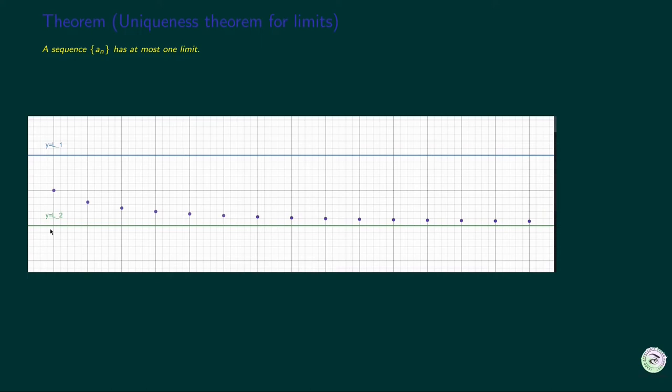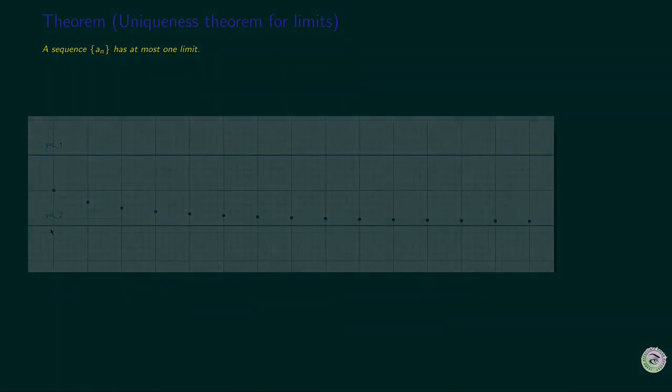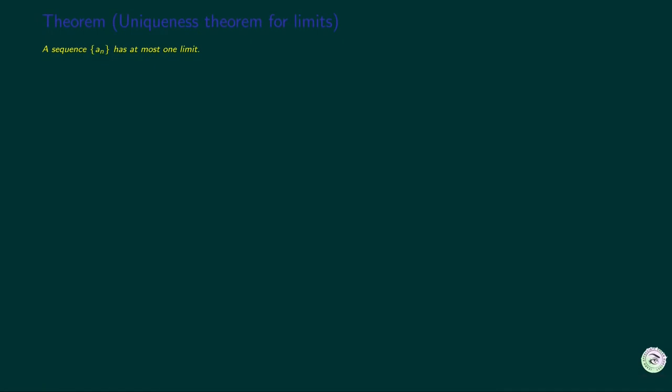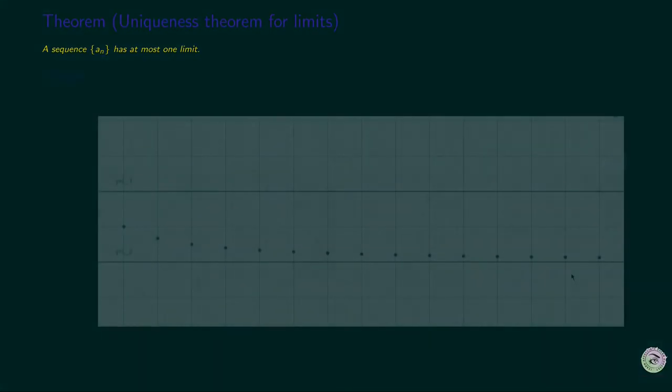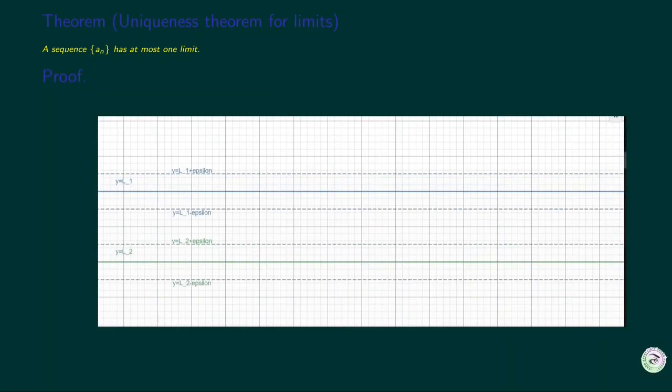Now this is not proof, just an intuitive perception. Can we convert it to a proof? We can convert this to proof by capturing this observation through the epsilon-N definition. Since l1 and l2 are limits of a_n, they should satisfy the definition. For any given epsilon greater than zero, since l2 is a limit, there exists N values, say n2, such that all a_n terms after that will lie in the green epsilon tube around l2. For any given epsilon greater than zero, since l1 is a limit, there exists N values, say n1, such that all a_n terms after that will lie in the green epsilon tube around l1.